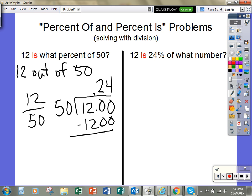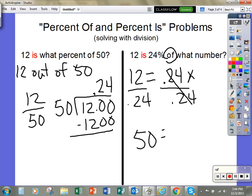The other side is a little bit different in that I'm going to keep it in the same order. 12 equals 0.24. And then we said earlier that 'of' means times. So I'm going to multiply that times x because I don't know what the number is. And then to solve this, I would simply divide by 0.24 and get 50 equals x. And that's how you solve percent of and percent is problems.